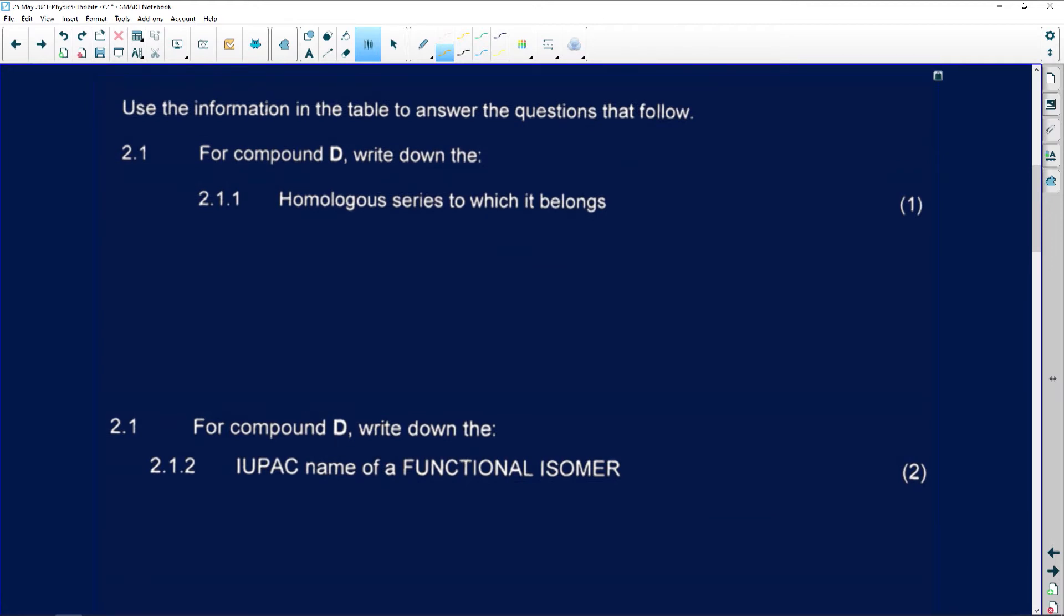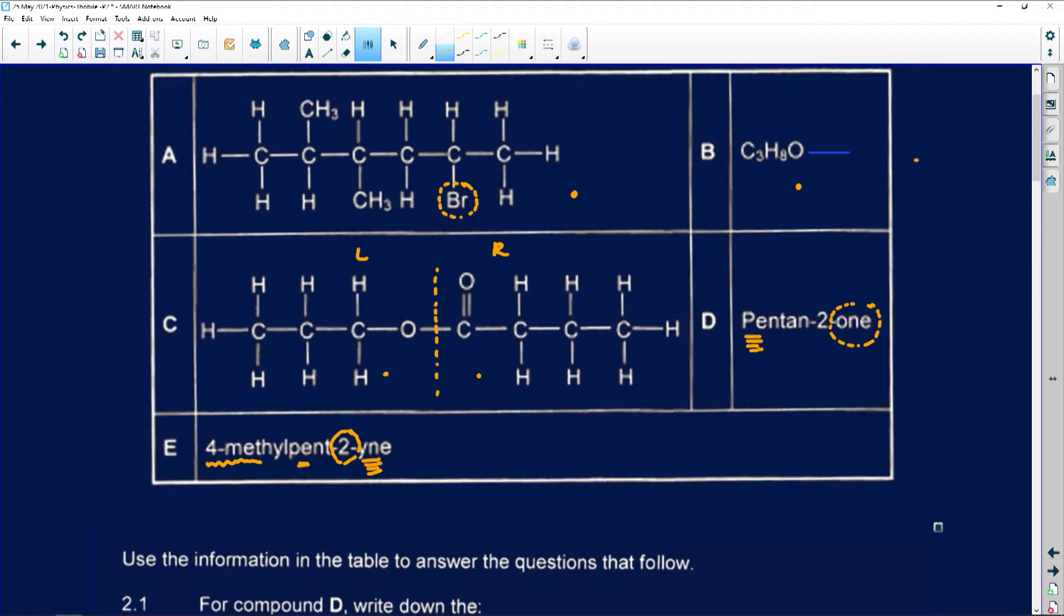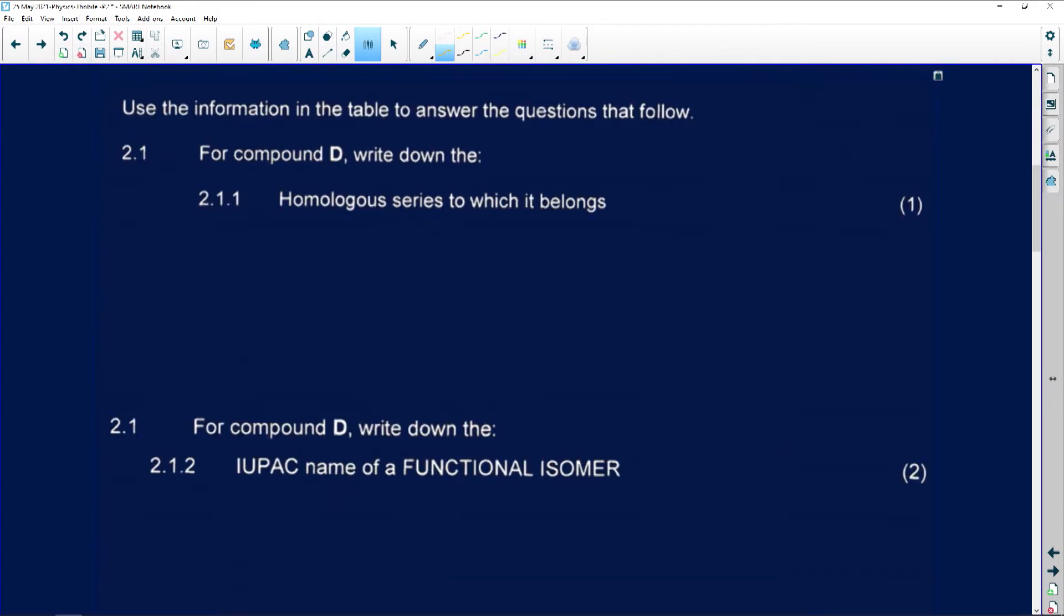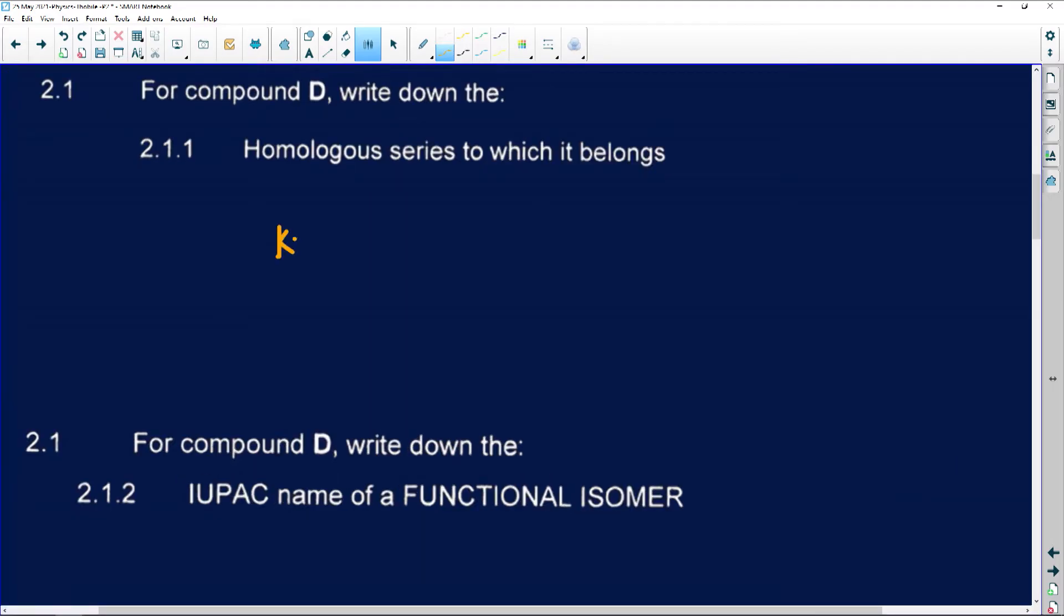So let's look at the first question. It says use the information in the table and answer the questions that follow. This is number 2.1. It says for compound number D, I must write the homologous series in which it belongs. If I go quickly to number D, I can see I've identified it. The O there will tell me that this belongs to ketones. The homologous series in which it belongs will be a ketone.